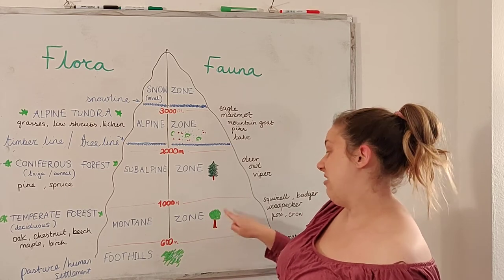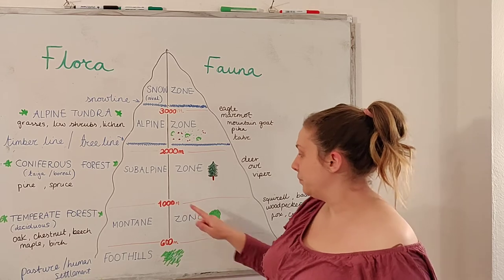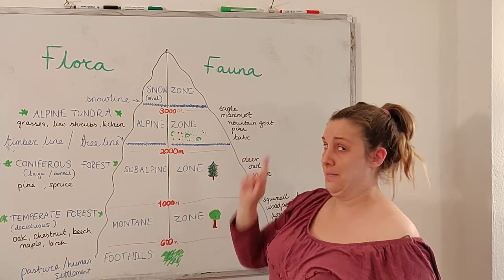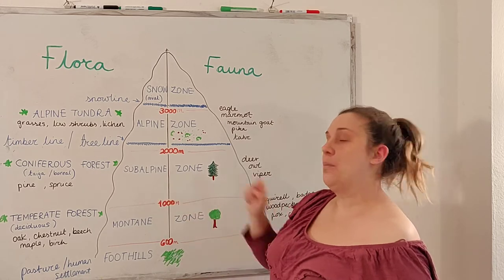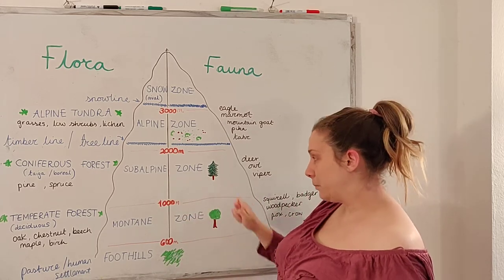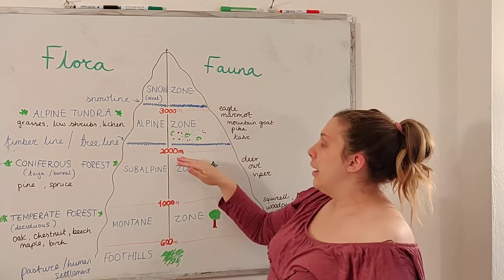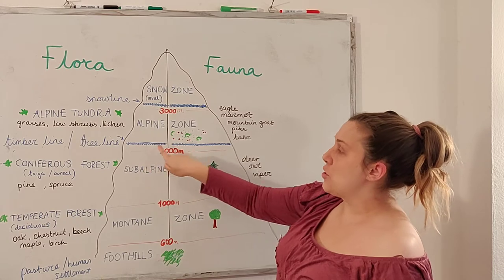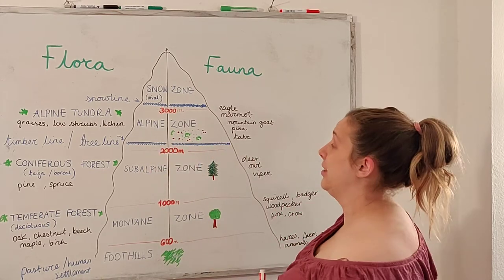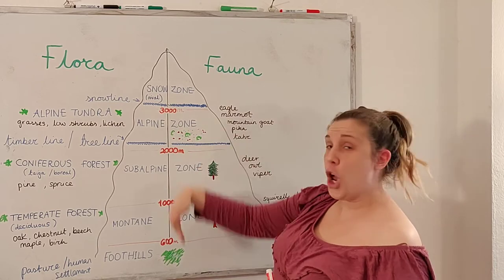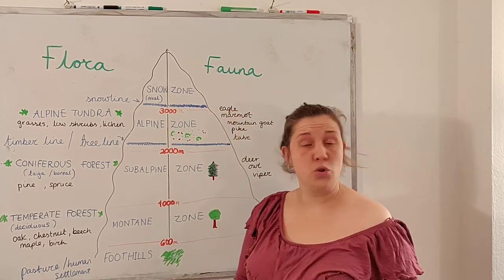The montane zone would be an area with trees and deciduous forest. When we get to 1000 metres up, this zone starts — the subalpine zone — up until 2000 metres. At 2000 metres, we've got something interesting: the tree line or the timber line. That means below there are trees, and above — no trees. No trees can grow.